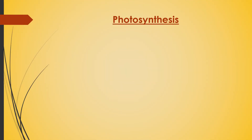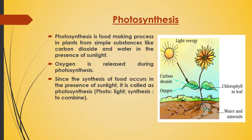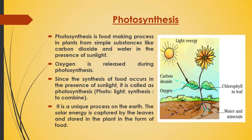As we discussed, plants prepare their own food by photosynthesis. What is photosynthesis? Photosynthesis is the food-making process in plants from simple substances like carbon dioxide and water in the presence of sunlight. Oxygen is released during photosynthesis. 'Photo' means light, 'synthesize' means to combine. Since the synthesis of food occurs in the presence of sunlight, it is called photosynthesis. It is a unique process on the earth — the solar energy is captured by the leaves and stored in the plants in the form of food.